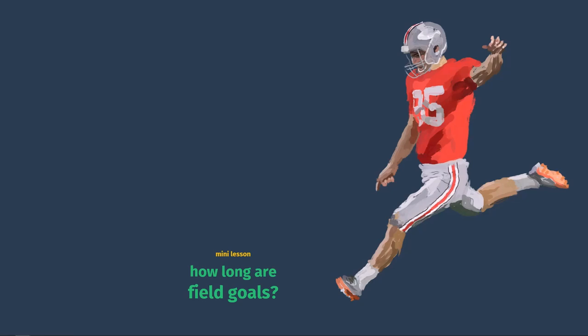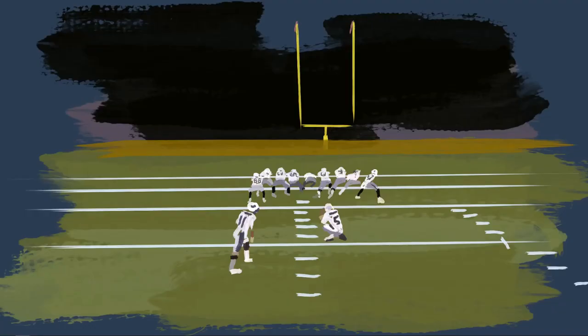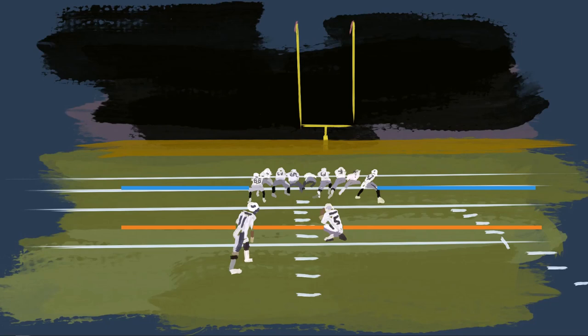So how do we quickly determine how long a field goal is going to be? Field goals are tracked by the actual distance they are kicked, not from the line of scrimmage where the ball is snapped from. This is different from how a quarterback's passes are tracked from the line of scrimmage rather than from where he actually throws the ball.